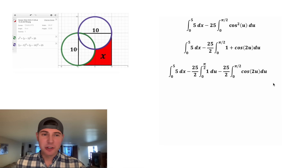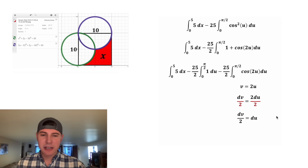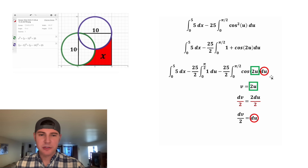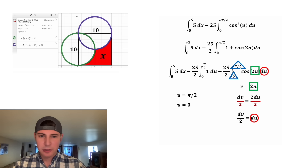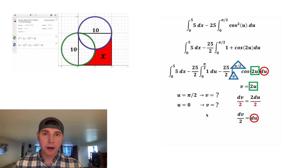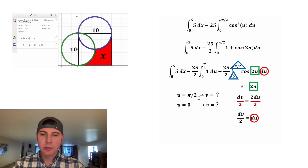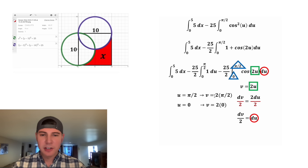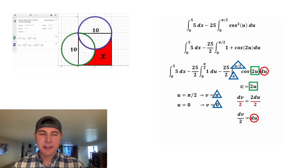To handle the cosine 2u integral, we use v-substitution: let v equal 2u, so dv equals 2 du, and dividing both sides by 2 gives dv over 2 equals du. We now have replacements for 2u and du. For the limits: when u equals pi over 2, v equals 2 times pi over 2 which is pi; when u equals 0, v equals 0. So our new limits of integration are 0 to pi.